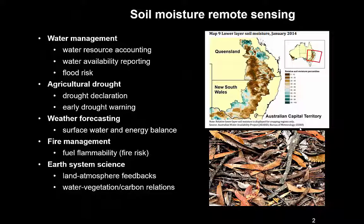Soil moisture is really useful for quite a large number of applications. For water resources accounting — knowing how much water is where — and for flood risk, it's really useful to know the current soil moisture. The wetter the soil is, the more of the rainfall will be turned into floodwaters. Agricultural drought is also very important in Australia, where drought declaration depends at least partly on the availability of soil moisture.